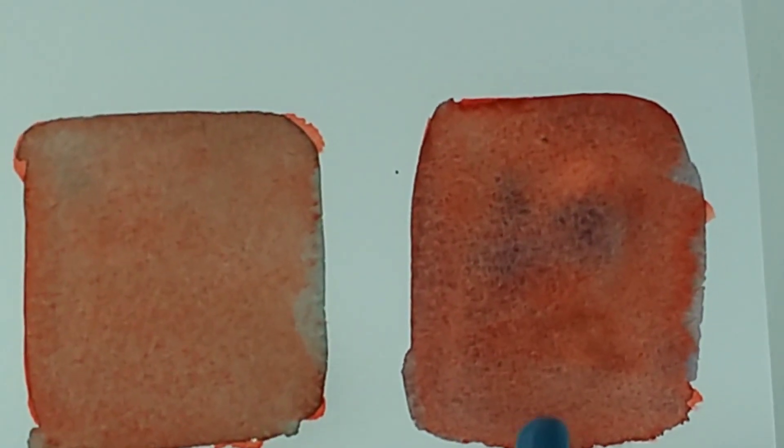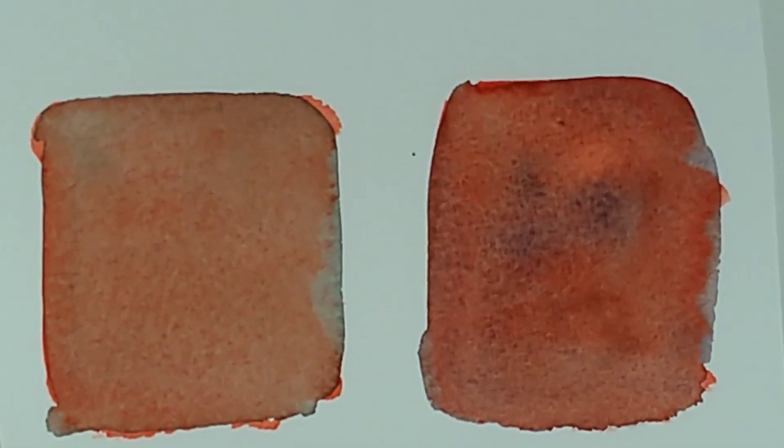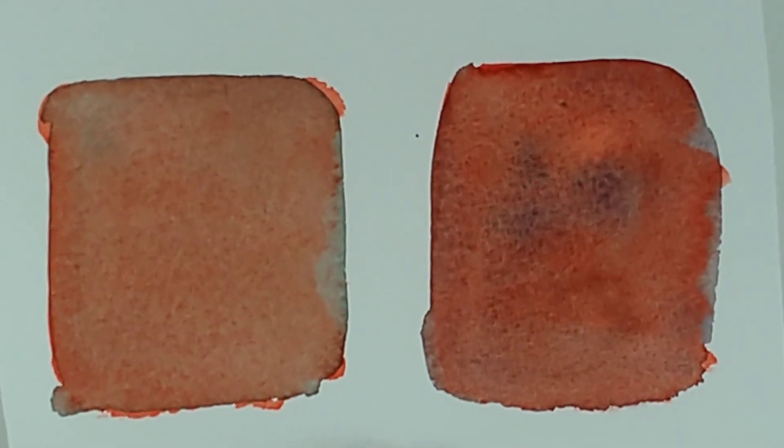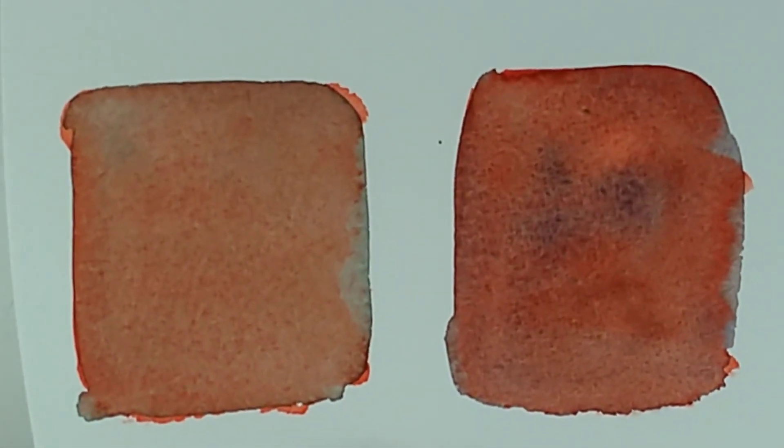Of course there might be occasions where you want that texture, but more often than not you don't want that top layer to be particularly noticeable. You just want to build up and adjust your underneath color. And so you want to be using a staining color like this one.